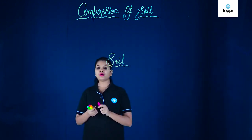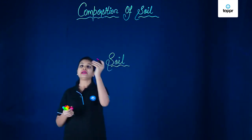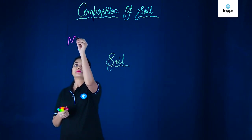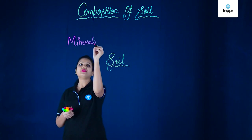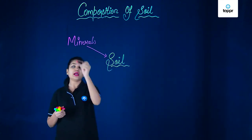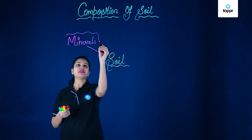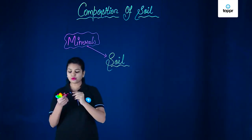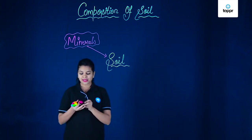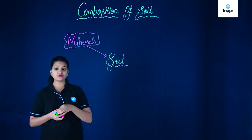So the first and a very important thing that is found in soil is the minerals. So minerals, they are found in the soil. They make up the soil and what are these minerals? Well, these minerals are basically formed by the breakdown of large rocks.